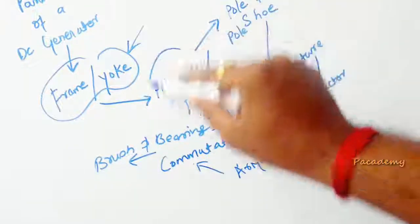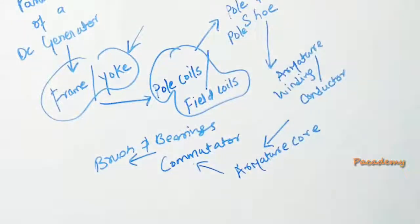And then there are pole coils or the field coils. These are the coils or the windings which, on passage of current, produce the electromagnetic field. When cut by the conductors of the armature, this produces an EMF in the conductor which will flow as an external current in the external circuit when closed.